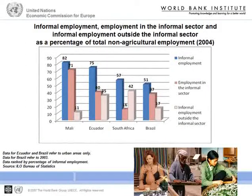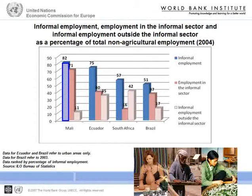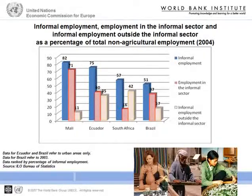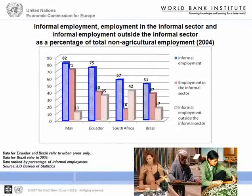This example displays how large informal employment can be as a share of total non-agricultural employment in the selected countries of Mali, Ecuador, South Africa, and Brazil. In these countries, at least half of all non-agricultural employment is informal employment, reaching 82% in Mali. Different proportions of informal employment are outside of the informal sector in different countries. In Mali, only 11% of total non-agricultural employment is informal employment outside the informal sector, while it is 42% in South Africa. It should be noted that employment in the informal sector may include formal jobs. The two bars referring to employment in the informal sector and informal employment outside the informal sector do not necessarily add up to the third bar, informal employment.